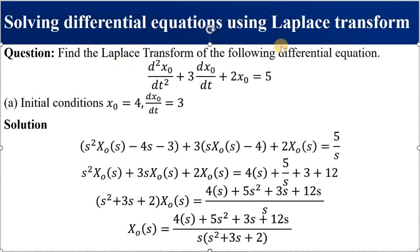Finding the Laplace transform of a differential equation: for d²x₀/dt² and 3·dx₀/dt, we apply the Laplace transform to each term. Arranging like terms and factoring out gives a polynomial expression in s. Making X₀(s) the subject of the formula by dividing by the appropriate expression gives the Laplace transform of the differential equation. Can you verify whether the result is correct?